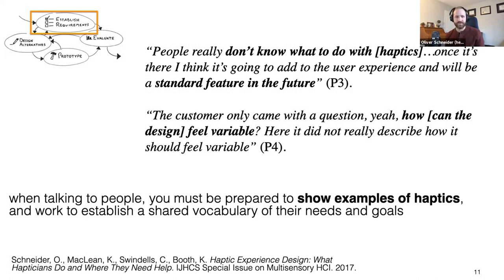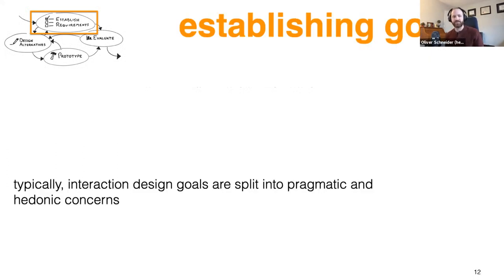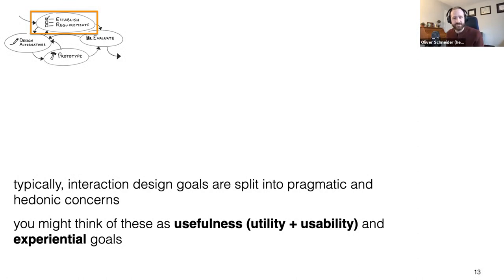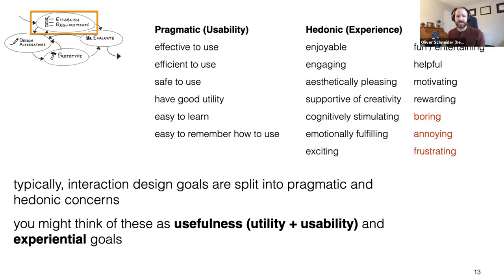Once you understand a bit of what the person needs, the next thing is to establish your goals. In interaction design, goals are split into pragmatic and hedonic concerns. Pragmatic concerns include usefulness and usability — it's effective, efficient, safe, easy to learn and remember. Experiential or hedonic goals are things like: it's enjoyable, engaging, aesthetically pleasing. Negatively, it might be boring, annoying, or frustrating — and you can think to interfaces that are frustrating; you just don't want to use them.